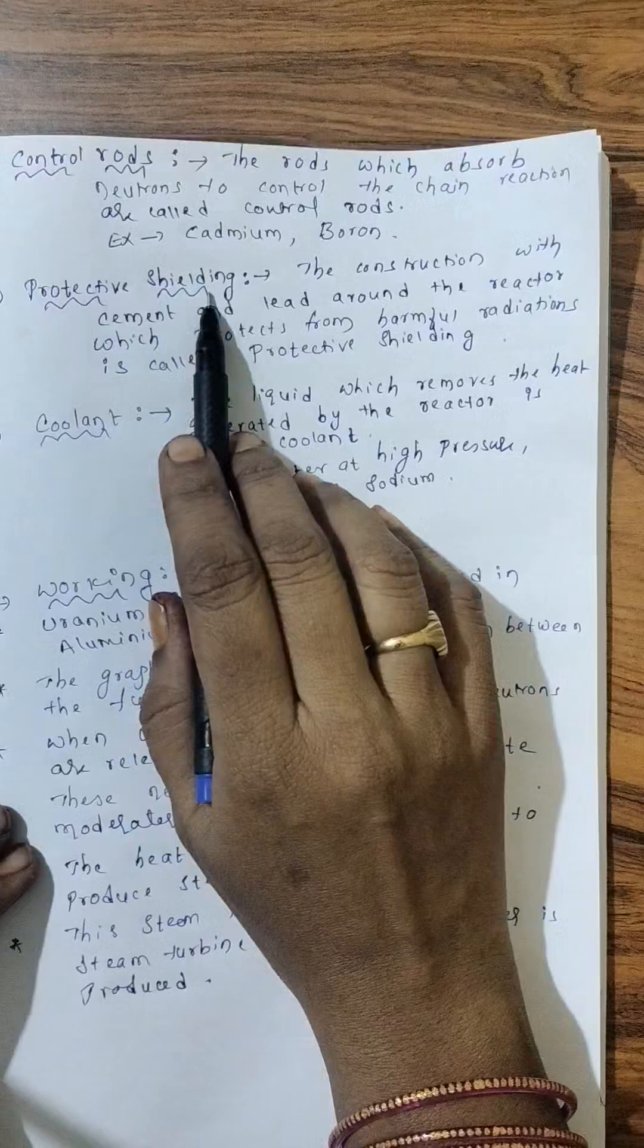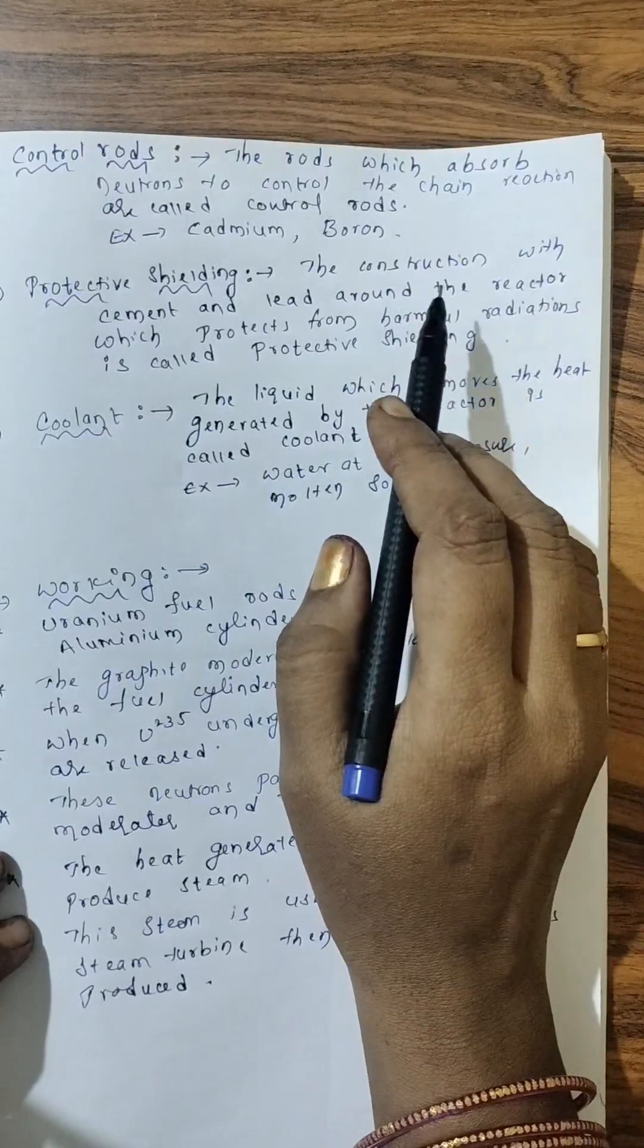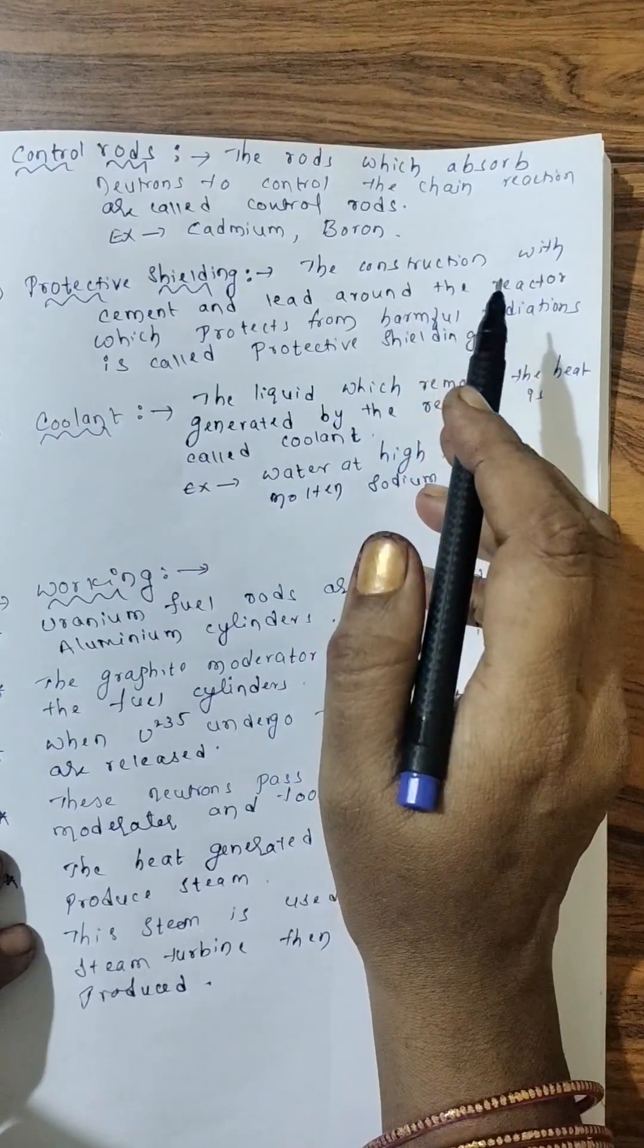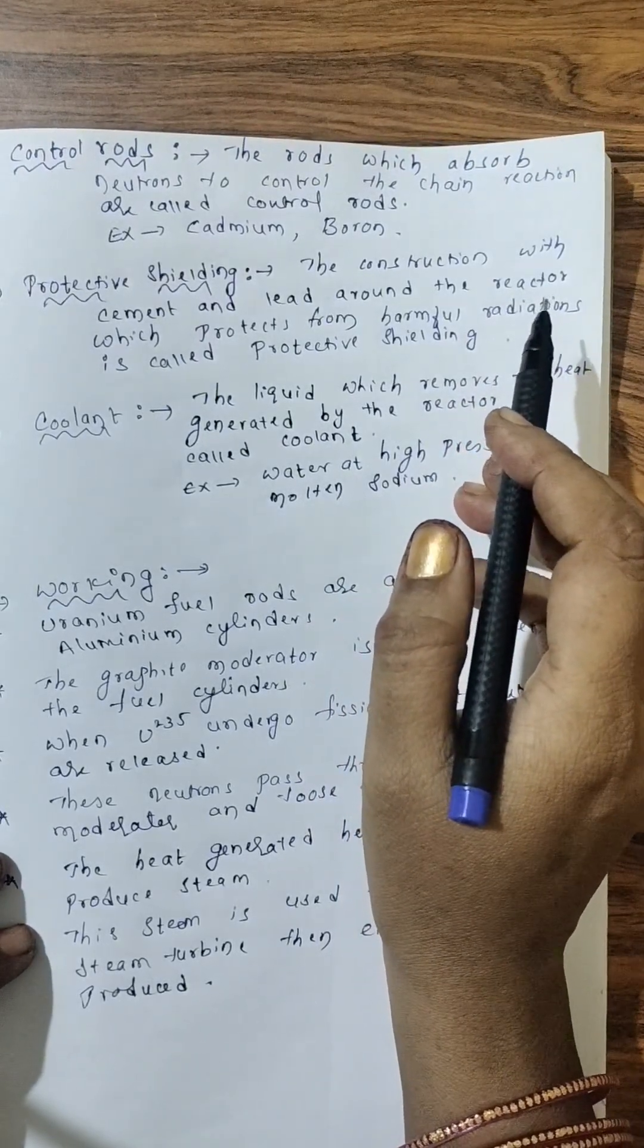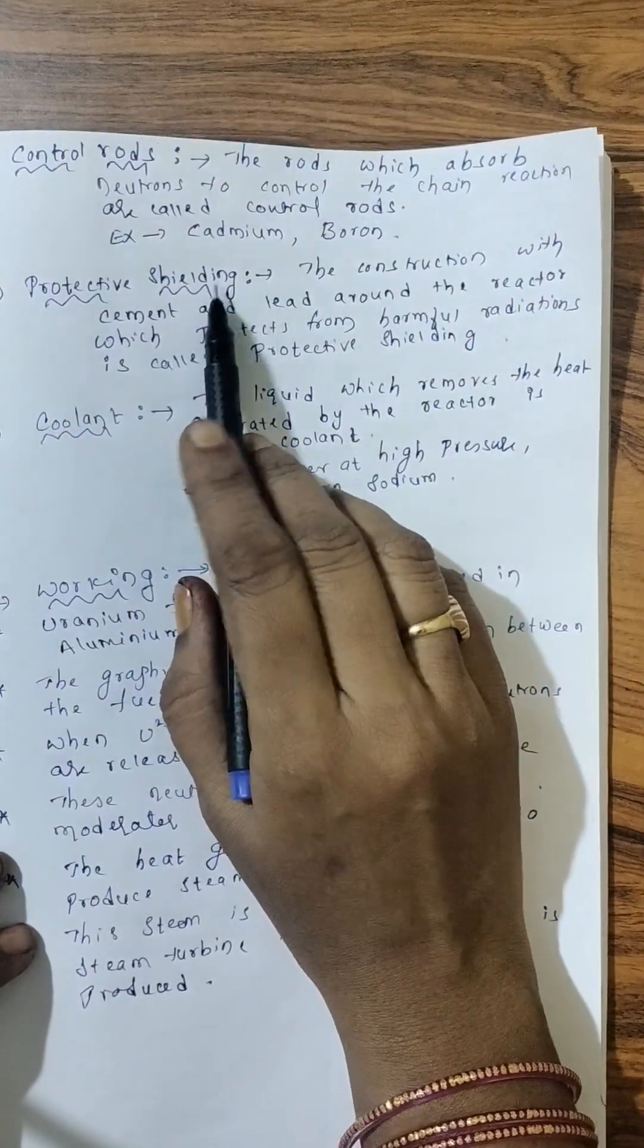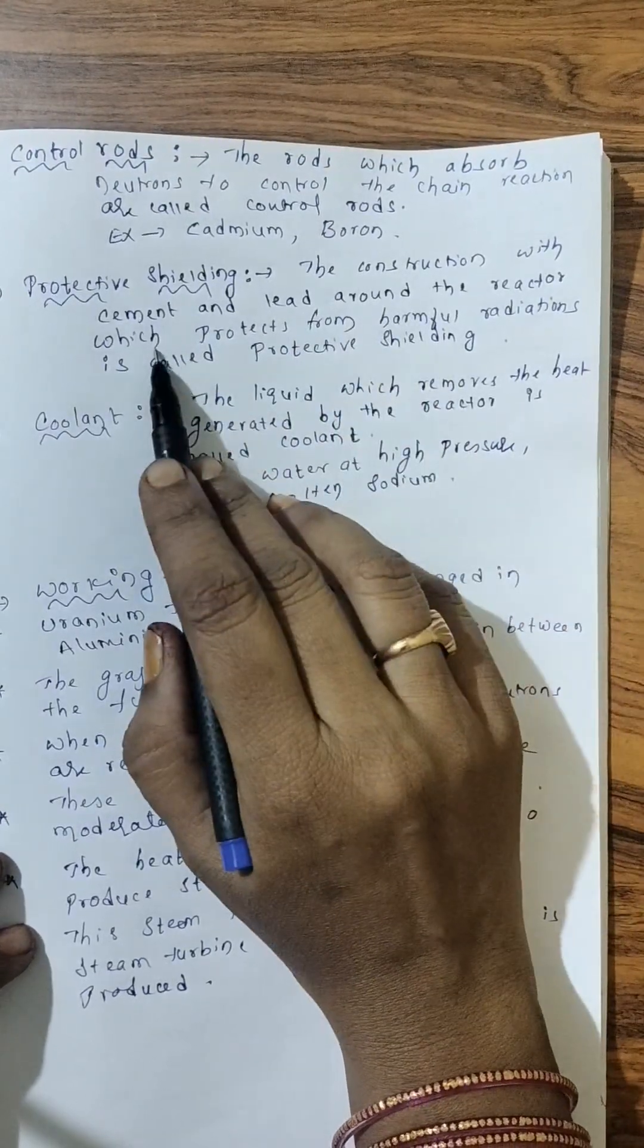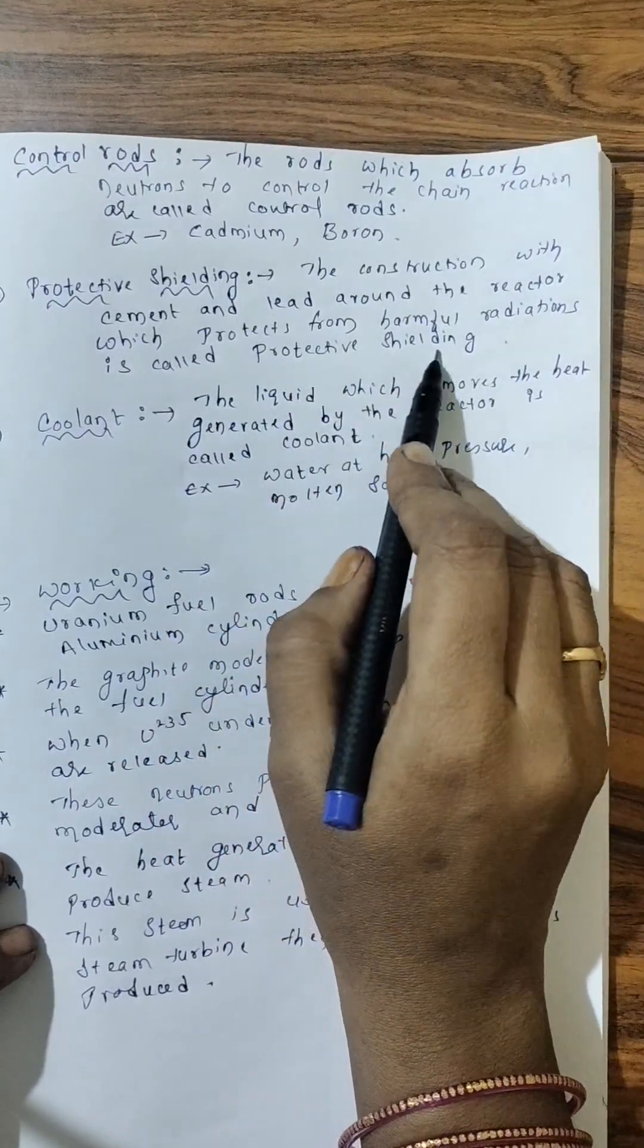Now next one, protective shielding. Now during fission process, alpha, beta radiations are emitted. If they are mixed up with the atmosphere, then these harmful radiations will create many disadvantages to the mankind as well as the nature. So in order to avoid that, we require a protective shielding. So how they do? They use cement and lead walls. The construction with cement and lead around the reactor protects from harmful radiations. And we call that wall as a protective shielding.